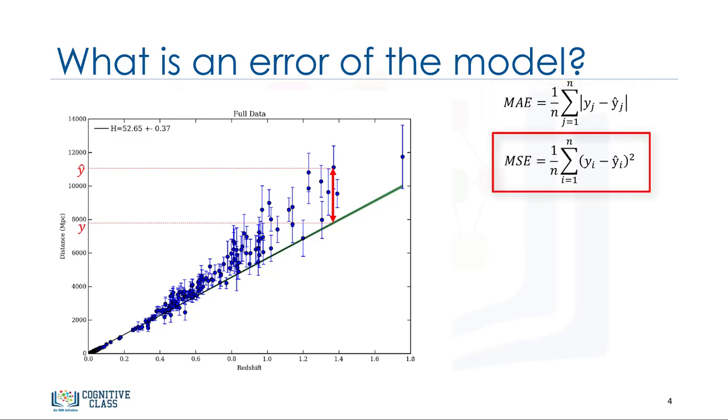Mean squared error is the mean of the squared error. It's more popular than mean absolute error because the focus is geared more towards large errors. This is due to the squared term exponentially increasing larger errors in comparison to smaller ones.